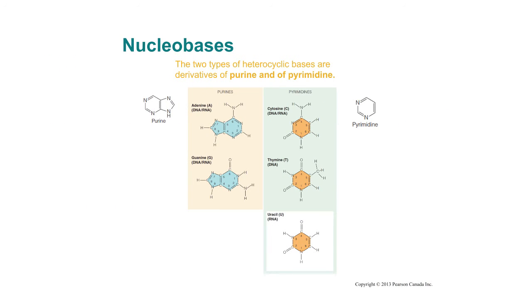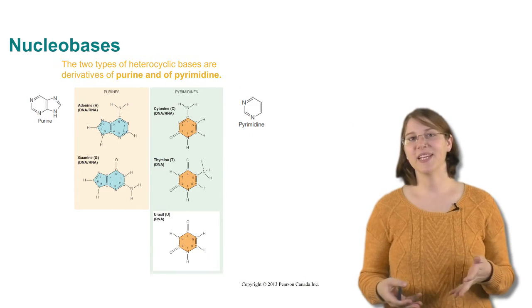To make a nucleic acid, you first need to have a nucleobase. And these are called bases because they contain nitrogen and carbon. The nitrogen is what makes these basic.